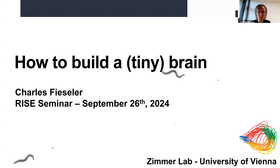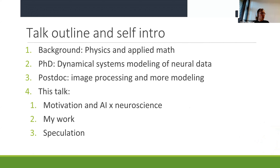My name is Charles, I usually go by Charlie, and I'm from the University of Vienna. In my talk I'll be talking about how to build a tiny brain. Just a tiny bit about me: I have a physics PhD, but I was kind of dissatisfied and I moved over to the computational side of everything, in the applied math department at the University of Washington.